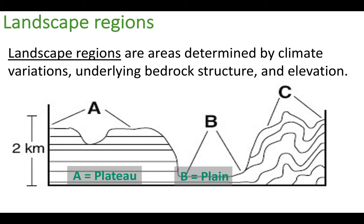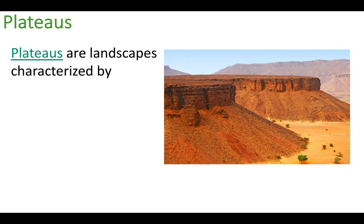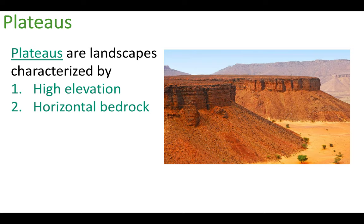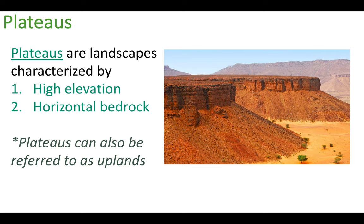The second is a plain, and the third is a mountain. What's amazing is within our entire state of New York we have all three of these landscape regions. Some states like Kansas are entirely made up of plains. The first one is a plateau — a landscape region characterized by two things: high elevation, and a top that is completely horizontal and flat. It's not a mountain because mountains have pointy tops; plateaus have no peak.